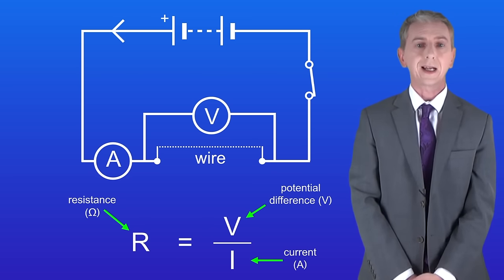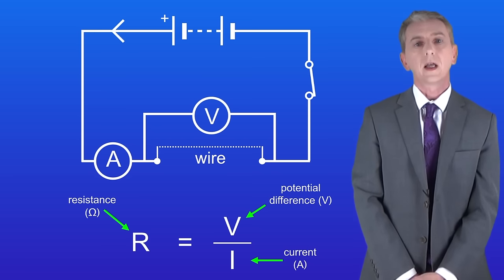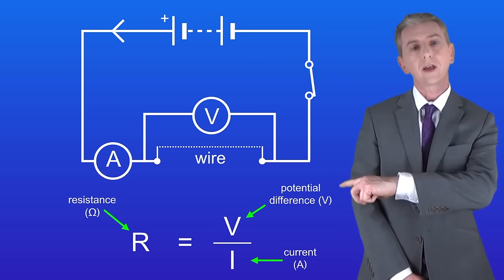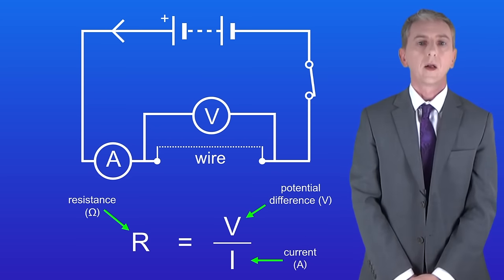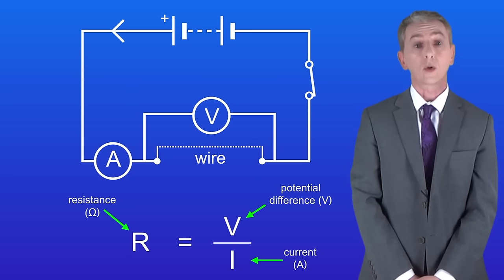We'll use these values to calculate the resistance in the circuit and to do that we'll use this equation that we've already seen. The resistance in ohms equals the potential difference in volts divided by the current in amperes.